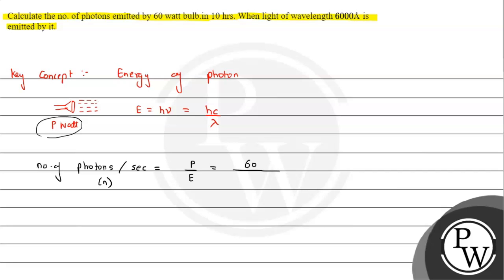So n equals 60 divided by hc over λ. h equals 6.63 × 10^-34, that's Planck's constant, times c equals 3 × 10^8, the speed of light, divided by λ which is 6000 angstroms or 6 × 10^-7 meters. Solving this, the value will be 18.09 × 10^19.